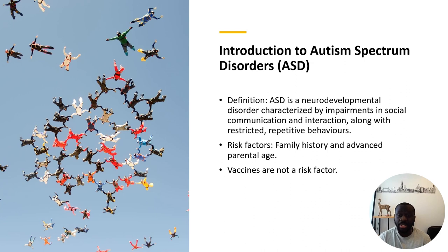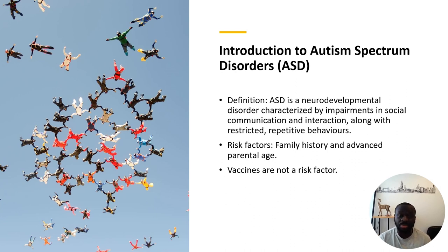ASD, or autism spectrum disorder, is a neurodevelopmental disorder, which means it's a problem that actually affects our brain — the functioning and development of our brain. It is characterized by impairments in social communication and interaction, along with restricted repetitive behavior. It's a spectrum, so a person who has ASD can present in a myriad of ways, ranging across a broad range of behaviors.